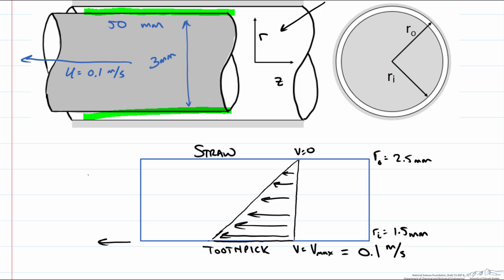So at this point we need some constitutive equation that is going to relate these forces that we have calculated for the toothpick being pulled out of this fluid compared to this velocity distribution that we have here. And they are related through the property of viscosity.